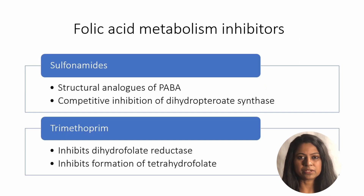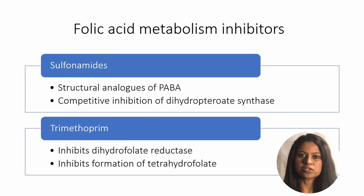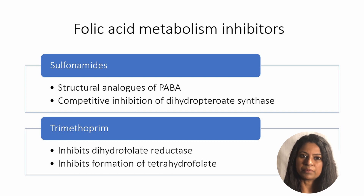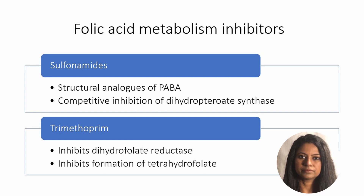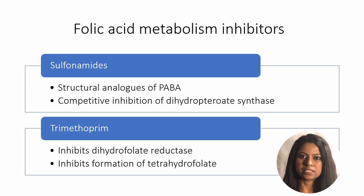Antibiotics that interfere with folic acid metabolism include sulfonamides and trimethoprim. They inhibit distinct steps in the pathway leading to folic acid and tetrahydrofolate synthesis. Sulfonamides are structural analogues of para-aminobenzoic acid, a substrate for the enzyme dihydropteroate synthase. Sulfonamides competitively inhibit this enzyme and thus inhibit DNA synthesis. Trimethoprim inhibits dihydrofolate reductase, which converts dihydrofolate to tetrahydrofolate, a later step in folic acid synthesis.